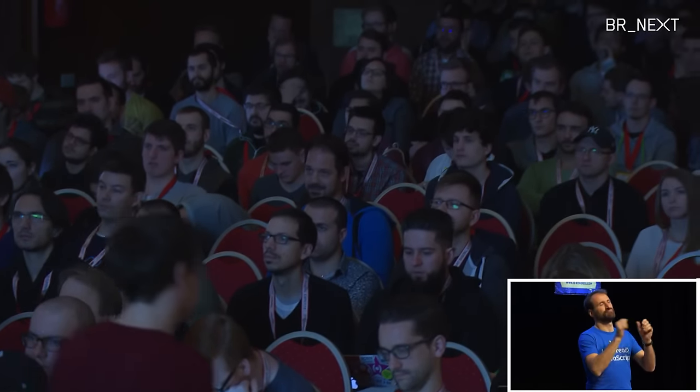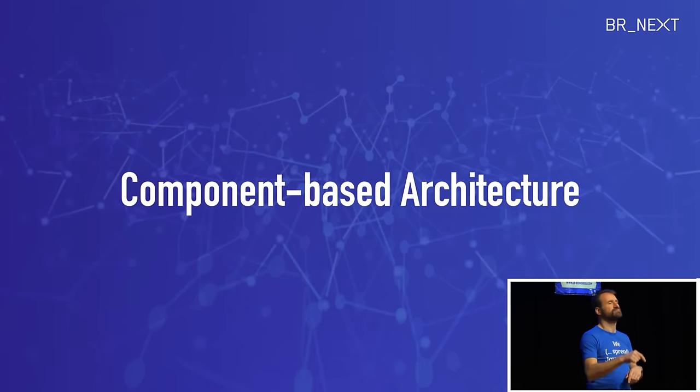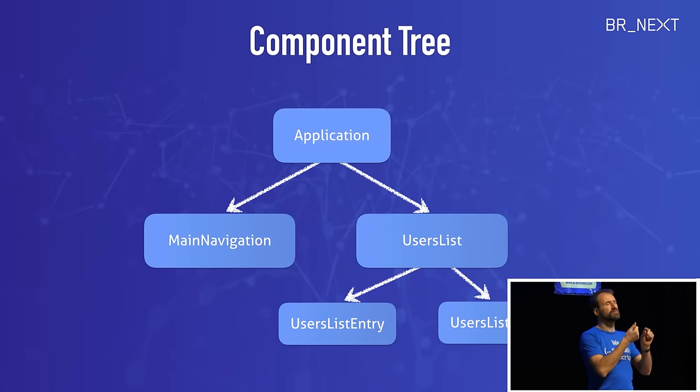There's also a new website called Angular.io. You'll find Angular 2-related stuff there, and all the Angular 1-related stuff is on AngularJS.org. The main difference between AngularJS and Angular 2 is that we have a component-based architecture. That means we write applications with the help of components and we have a component tree in our application. Every application has some sort of root component and multiple child components — for example, a main navigation and a user list with user list entry components underneath.